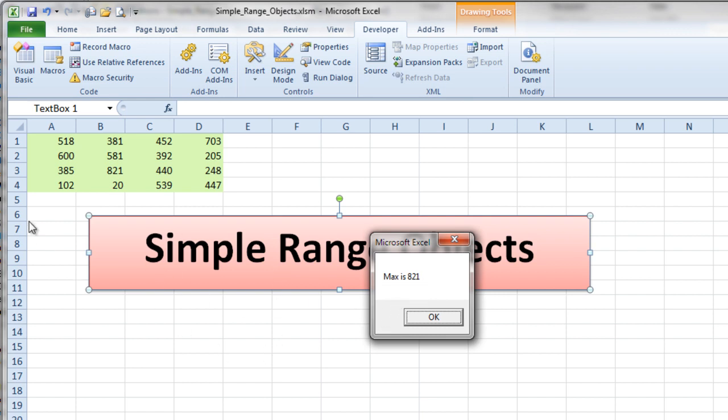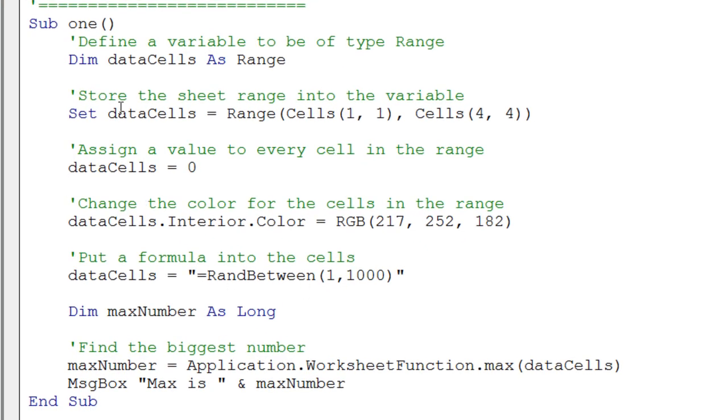And now it says the max is 821. Now when it ran it again, of course, it put the ran between in all these. And of course, every time it put the ran between into those cells, it recalculates the sheet. So there's the 821 right there. And indeed, that looks like that's the largest value in my range of cells. So this is a nice simple little piece of code that demonstrates a pretty powerful concept of using an object type range. So go ahead and play around with that.